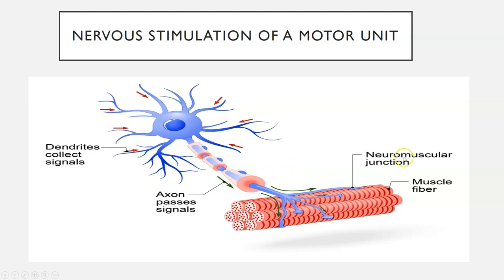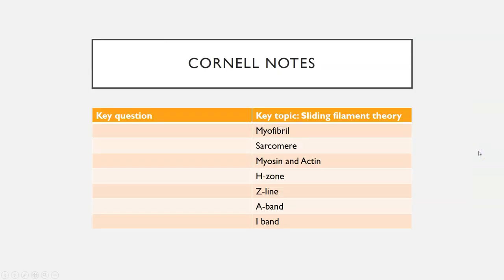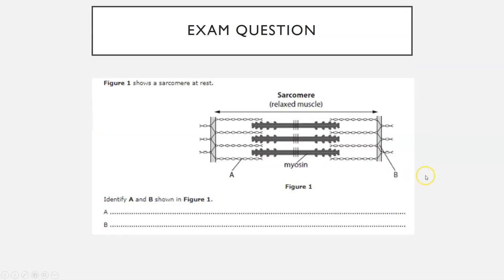Today's screencast will cover the basics and terminology of the sliding filament theory. Here are your Cornell notes — the key topics we need to be aware of: what a myofibril is, sarcomere, what myosin and actin are. We also need to know the H-zone, Z-line, A-band, and I-band — we need to be able to identify them on a diagram. For example, an exam question might show a sarcomere at rest and ask you to identify labelled structures. By the end of this screencast, we'll be able to label the sarcomere with H-zone, Z-line, A-band, I-band, actin, and myosin.